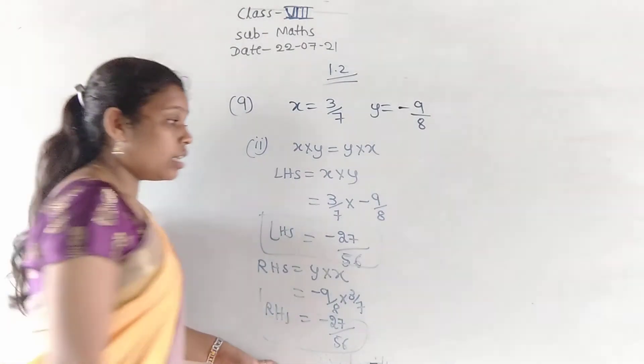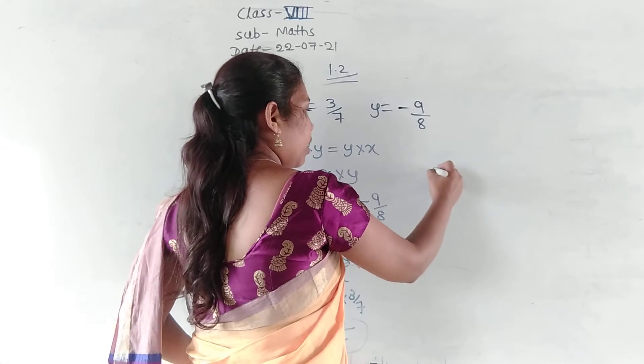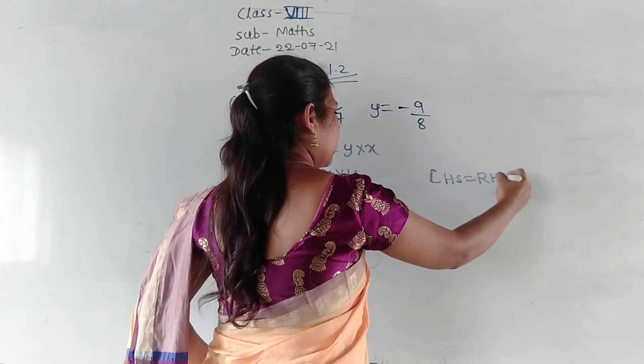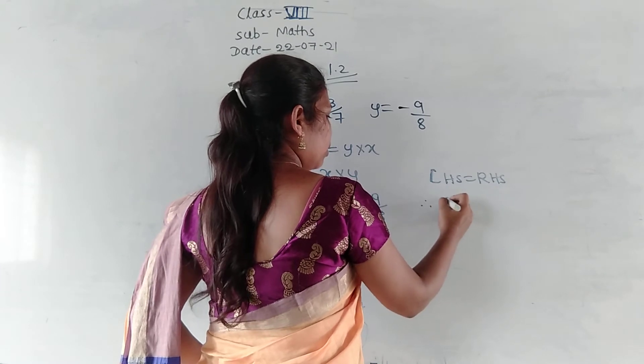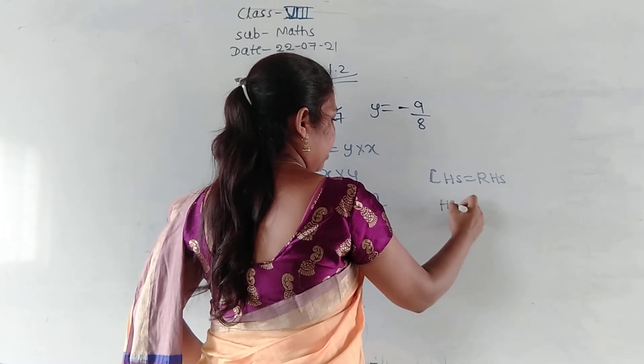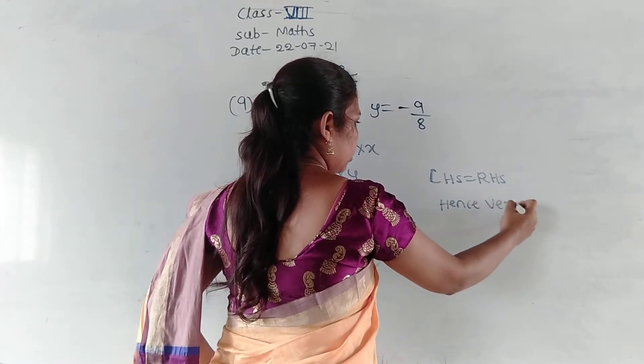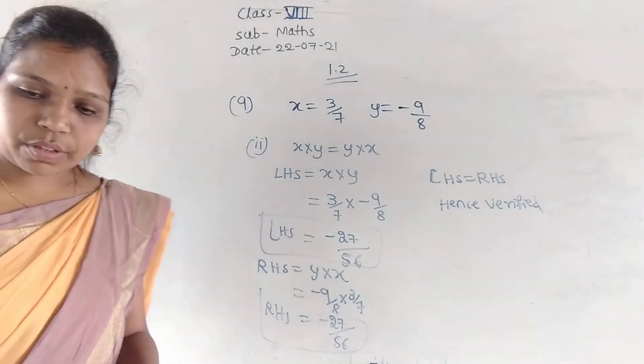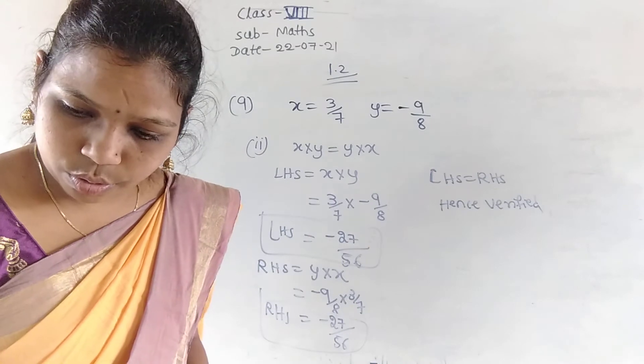Then what we can say here. LHS is equal to RHS. Therefore, hence verified. So, like that you have to solve.